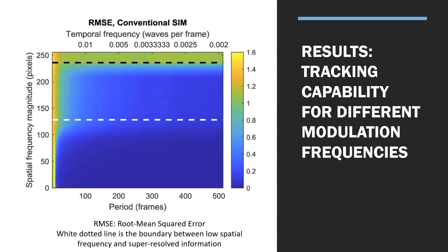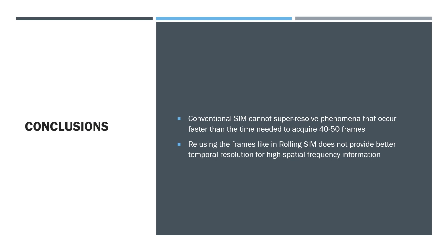We recently learned about an image reconstruction method called rolling SIM, which claims to improve the temporal resolution of traditional SIM by a factor of nine by reusing the same datasets in a different way. In traditional SIM, raw images 1 to 9 reconstruct the first SR image and images 10 to 18 the second. With rolling SIM, the second SR image is reconstructed with images 2 to 11, the third with images 3 to 12, and so on.